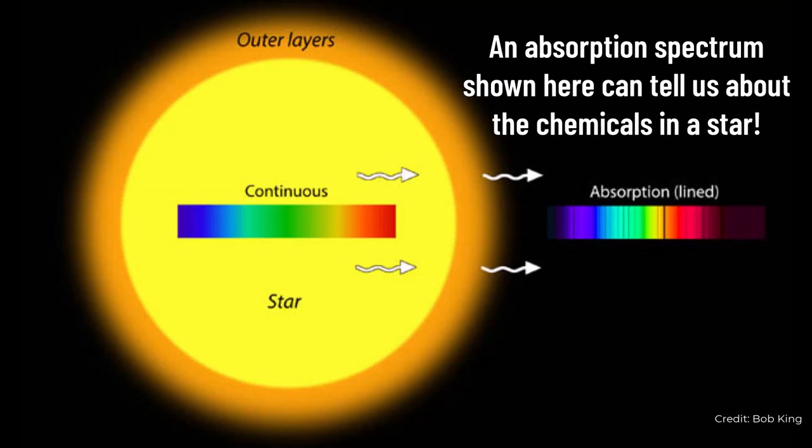Light can tell us many things, such as the distance to objects, what chemicals they're made out of, how big they are, and loads more.